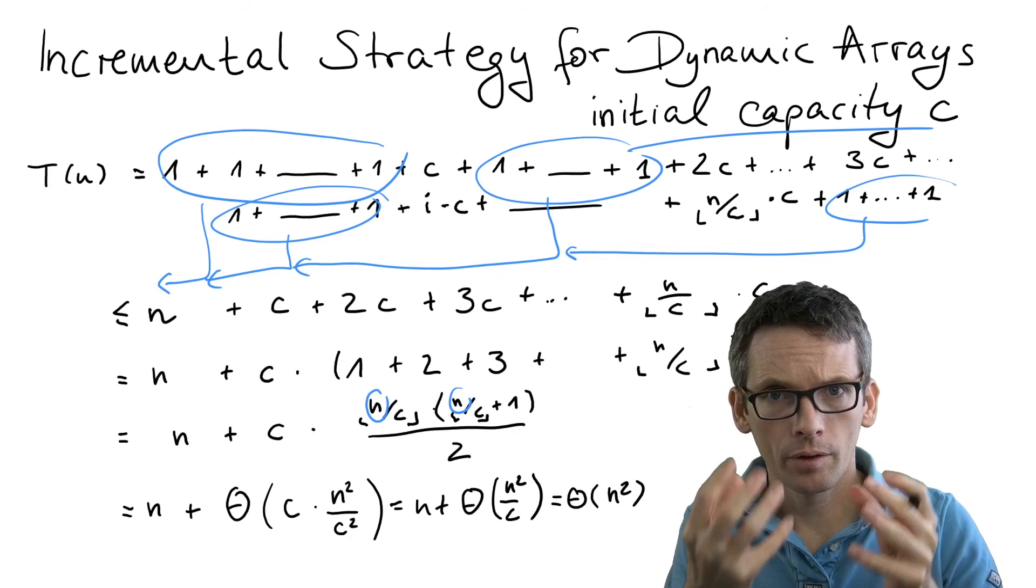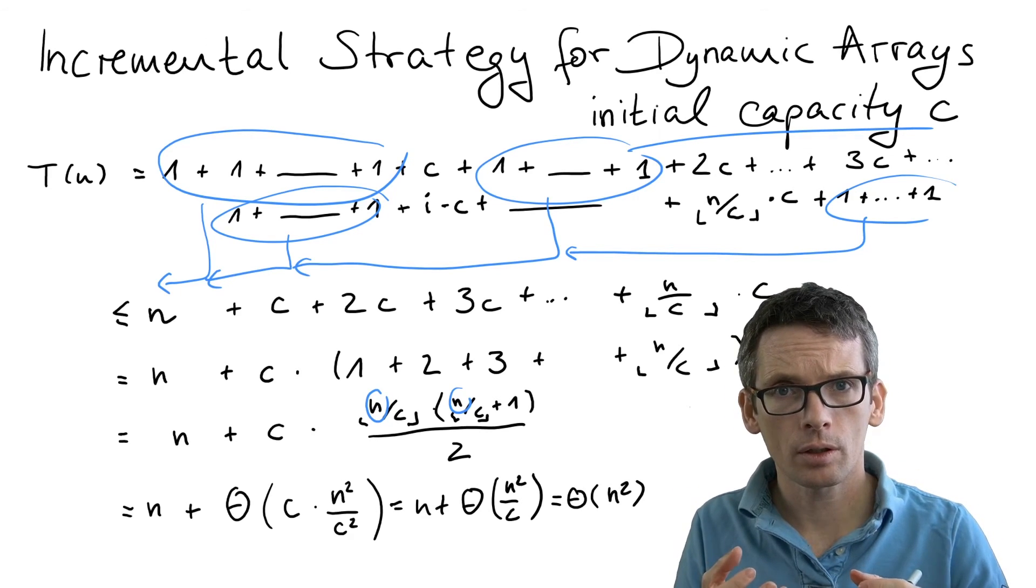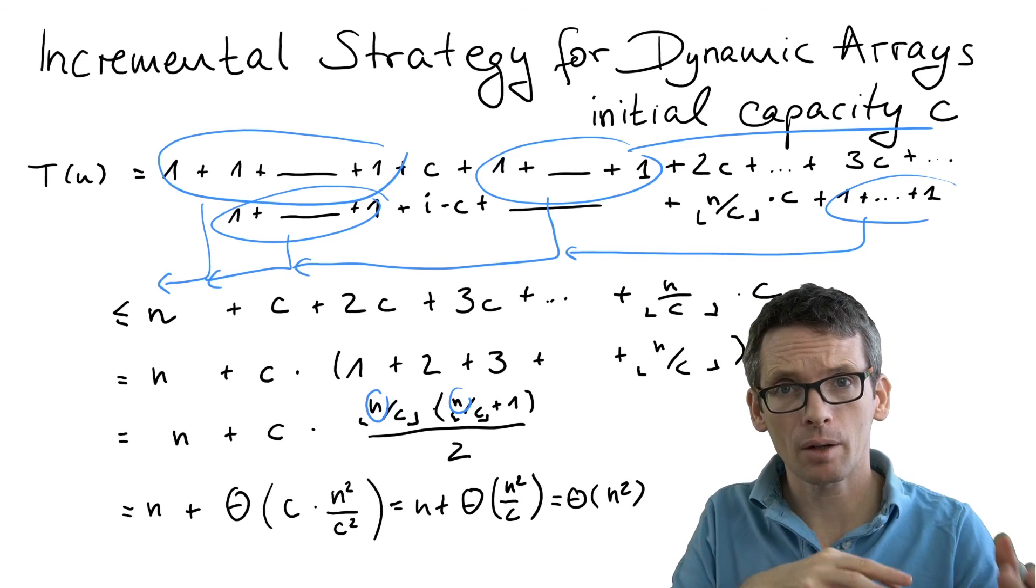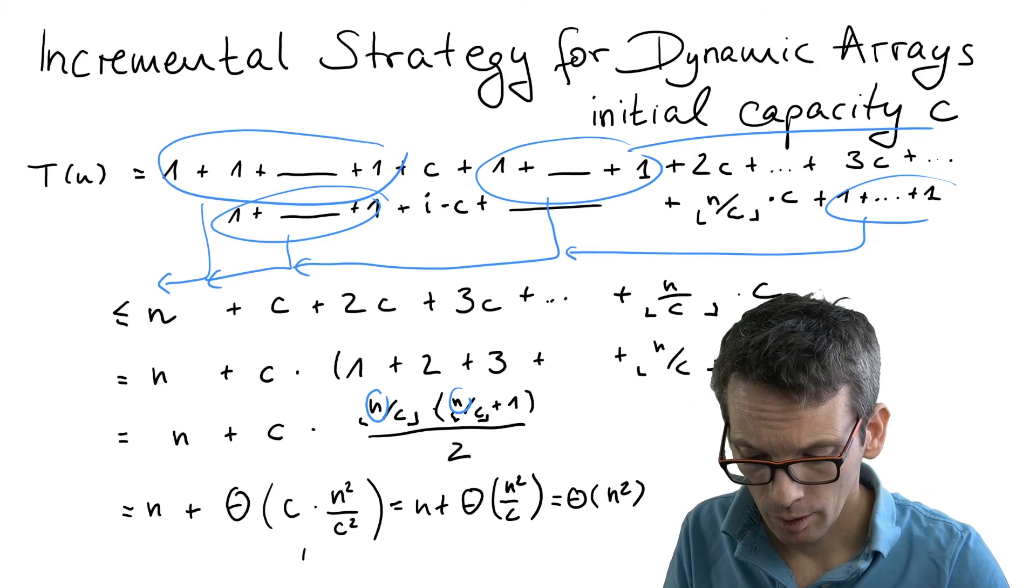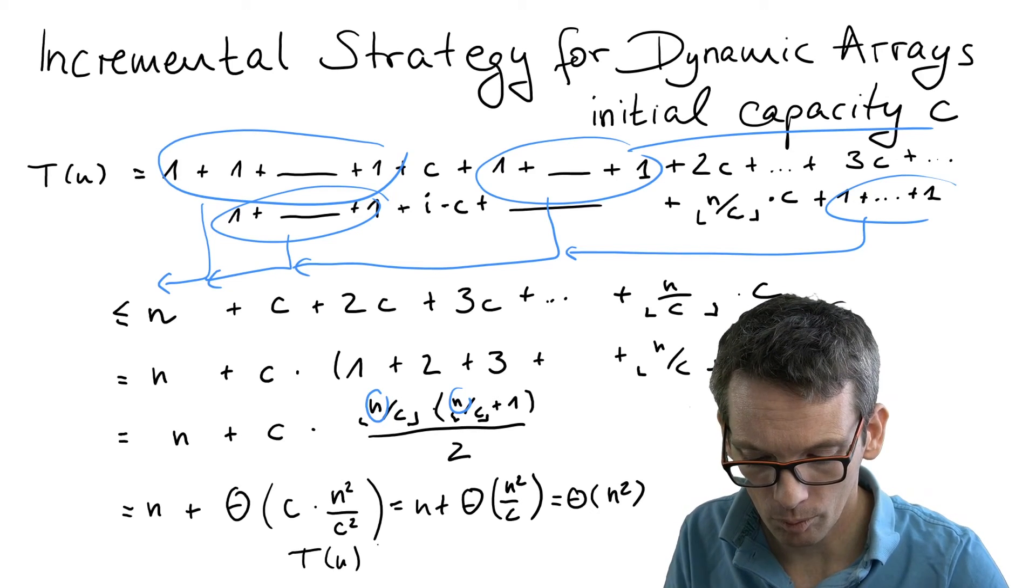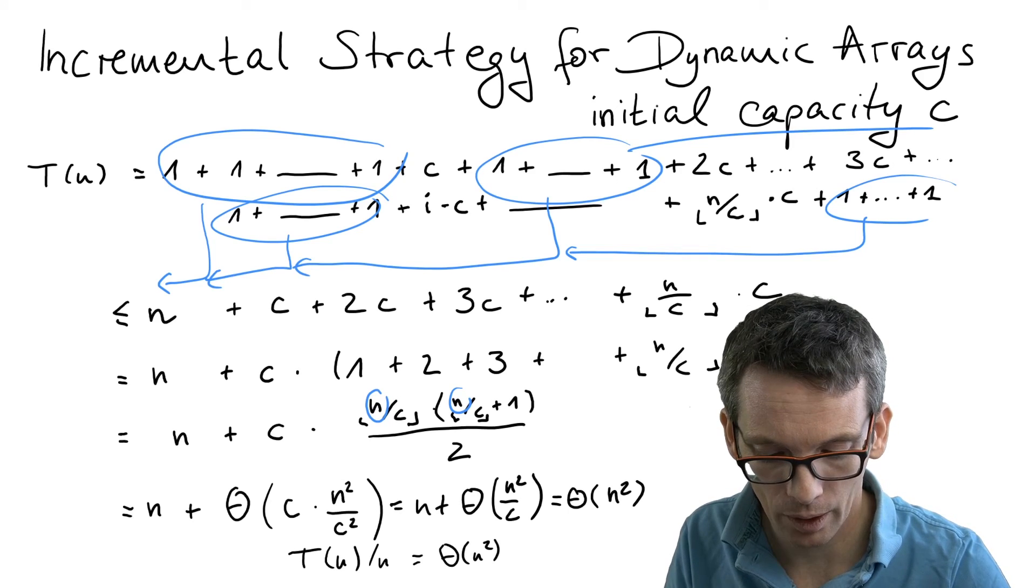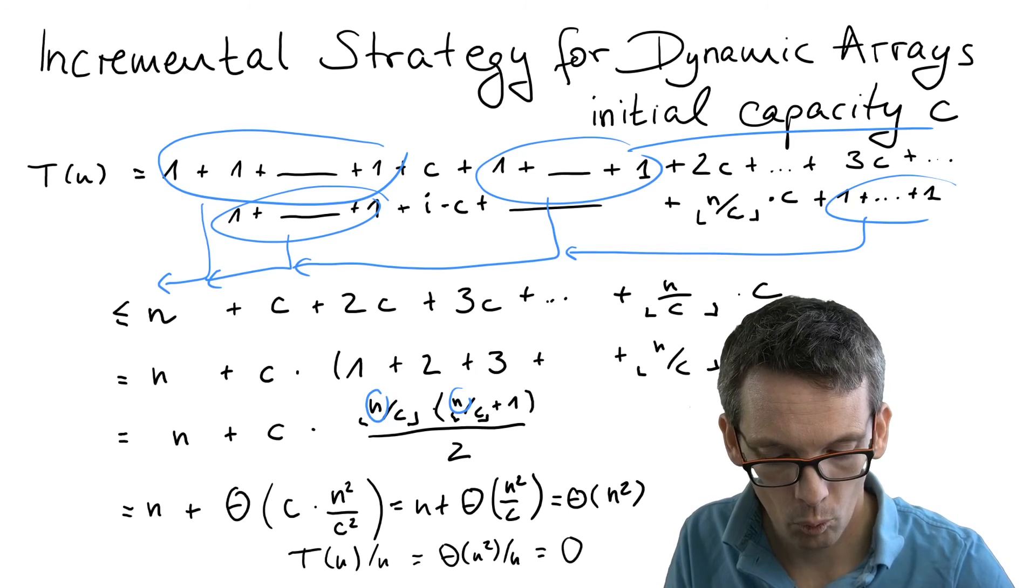Now that is the sequence of n push operations. I want to have the amortized cost per push operation. This is divide by n, so we get as amortized cost for one operation T(n) divided by n, that is theta of n squared divided by n, which is theta of n.